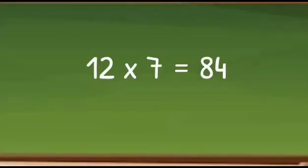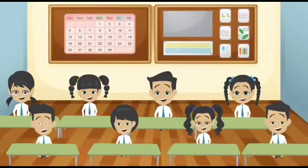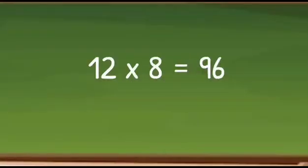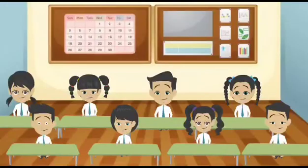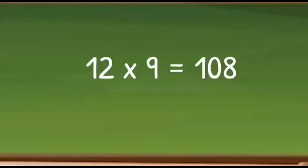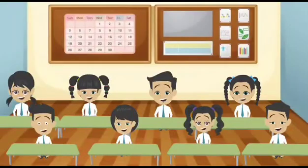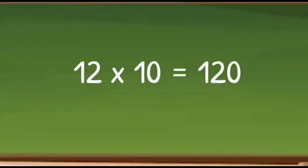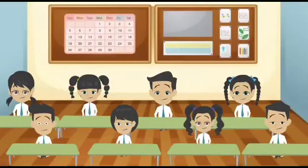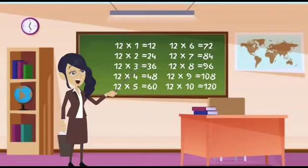12 7s are 84, 12 7s are 84. 12 8s are 96, 12 8s are 96. 12 9s are 108, 12 9s are 108. 12 10s are 120, 12 10s are 120. Let's do this again together.